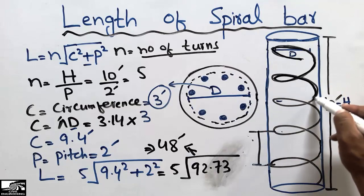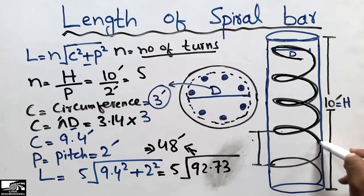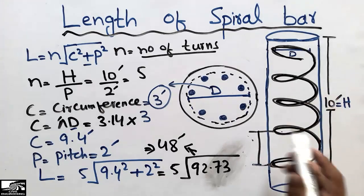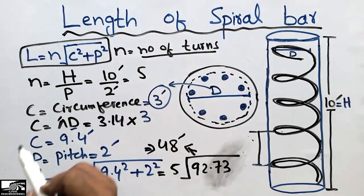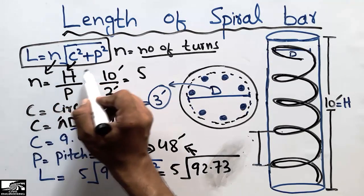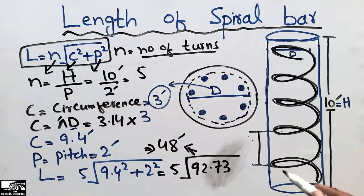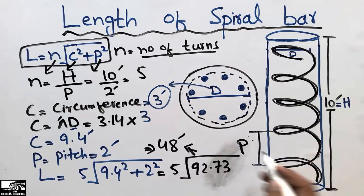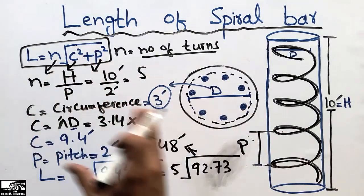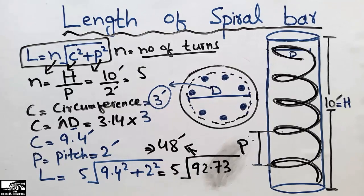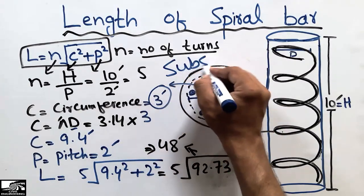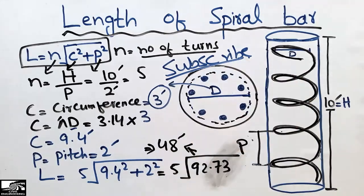There is no need to find it by any other method — this is the shortcut formula: L equals n times the square root of C squared plus P squared, where n is the number of turns, C is the circumference of the spiral bar, and P is the pitch — the distance between two consecutive spirals. Just put in all the values and calculate with a calculator to get the length of the spiral bar. It's a very useful formula used especially on the field, so you should remember this formula for future purposes. Thank you for watching.